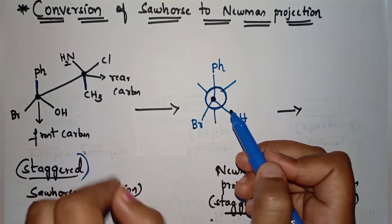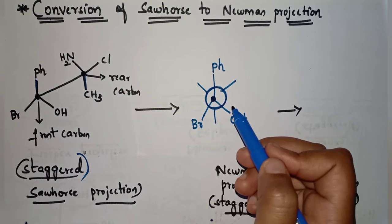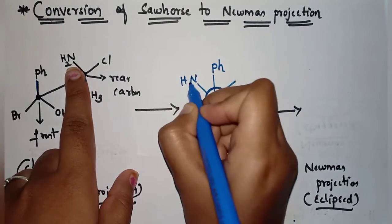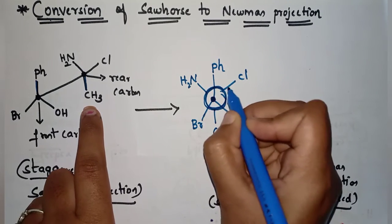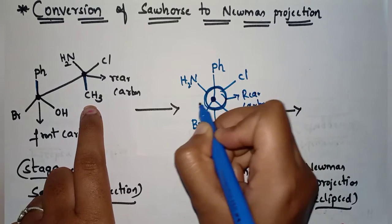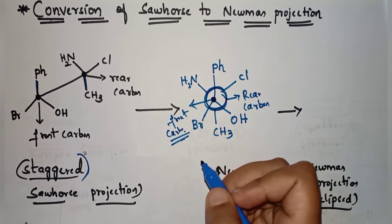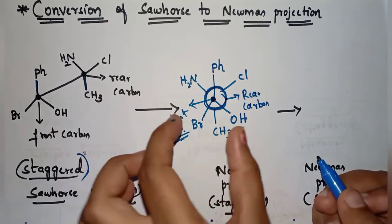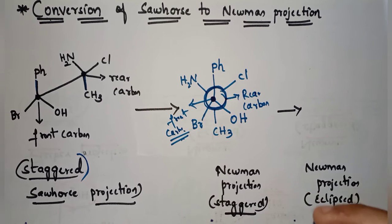The groups attached to the rear carbon are CH3, NH2, and Cl. On the rear carbon, NH2 is on the left side and Cl is on the right side, so I am representing NH2 here, Cl here, and CH3 here on the circle — because the circle represents the rear carbon in the Newman projection. We have now obtained the Newman projection staggered form.